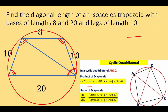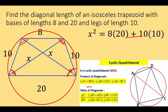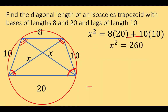Applying this to our problem: let's draw the diagonals and call their length x and x respectively, because they are equal. We can now form the equation: x squared — the product of the diagonals x and x — is equal to the sum of the products of opposite sides: 8 times 20, which gives 160, plus 10 times 10, which gives 100, for a total of 260. So x squared equals 260.